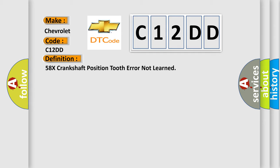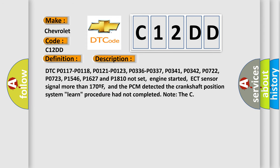And now this is a short description of this DTC code. DTC P0117, P0118, P0121, P0123, P0336, P0337, P0341, P0342, P0722, P0723, P1546, P1627 and P1810 not set. Engine started.